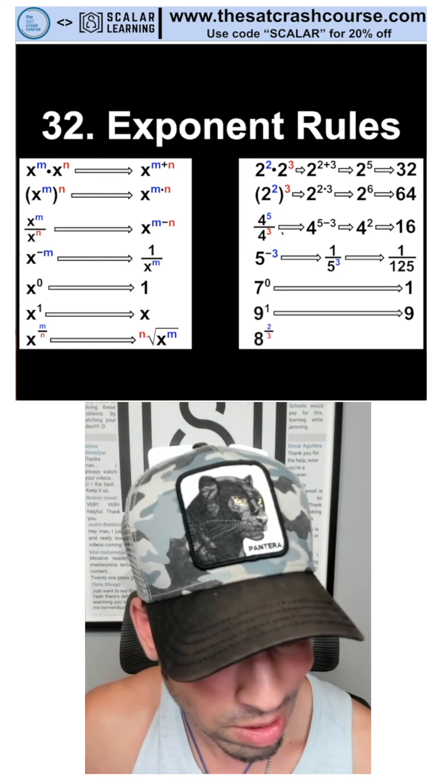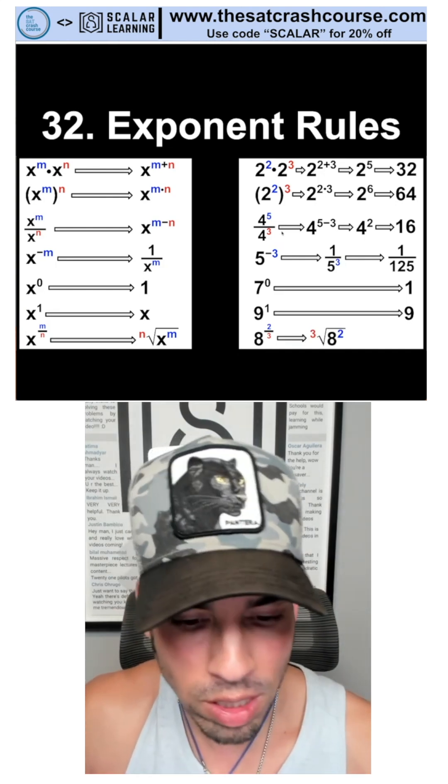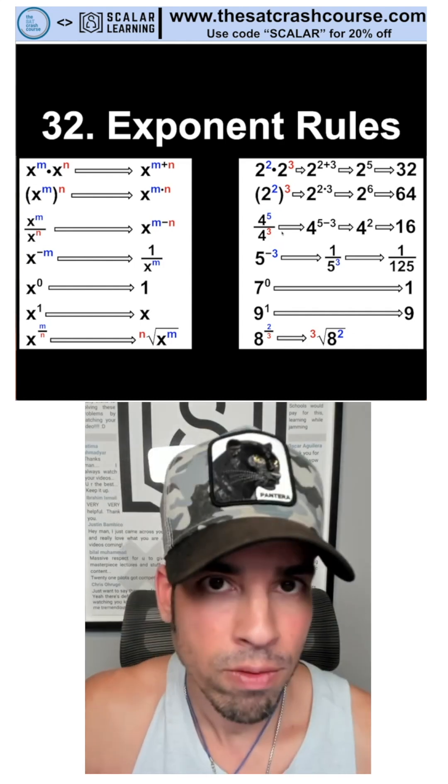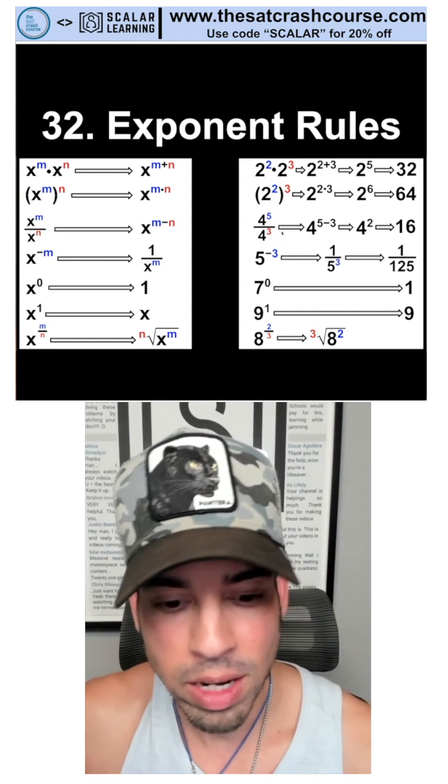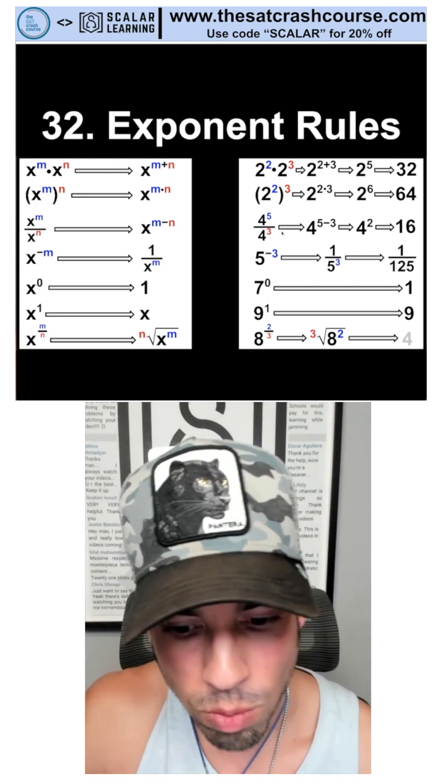We got eight to the two thirds. So let's check this out, let's break it down. It's gonna be the cube root of eight squared. What's eight squared? It's 64. What is the cube root of 64? Four, because four times four times four is 64. Now we could have also done it the other way. The cube root of eight is two. Two squared is four, so in either case, we're getting four.